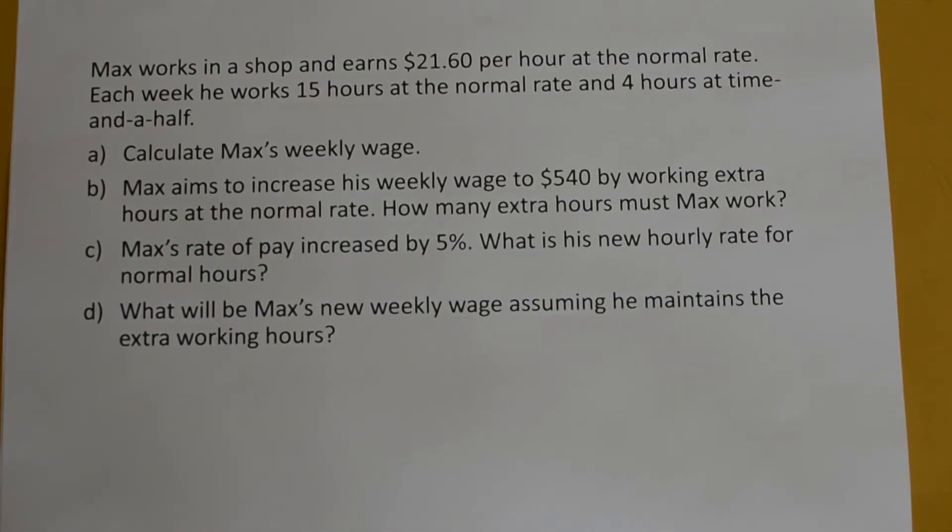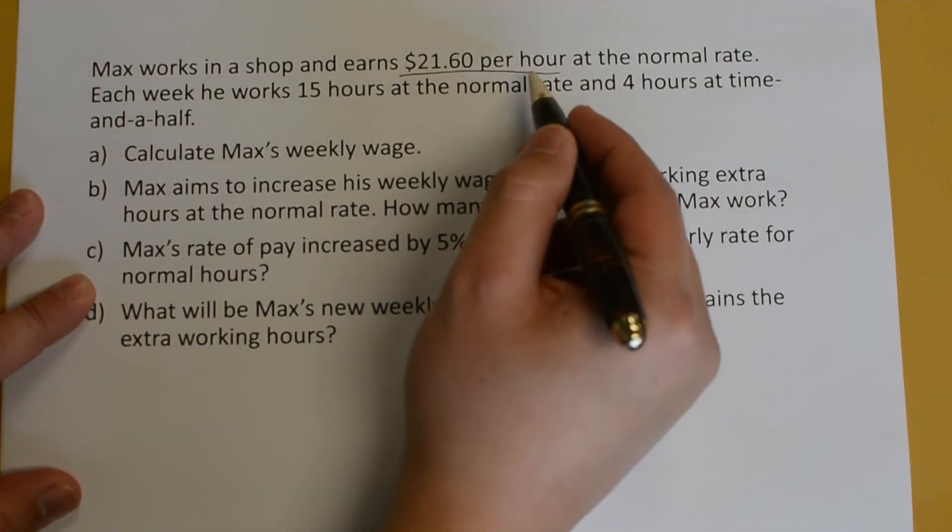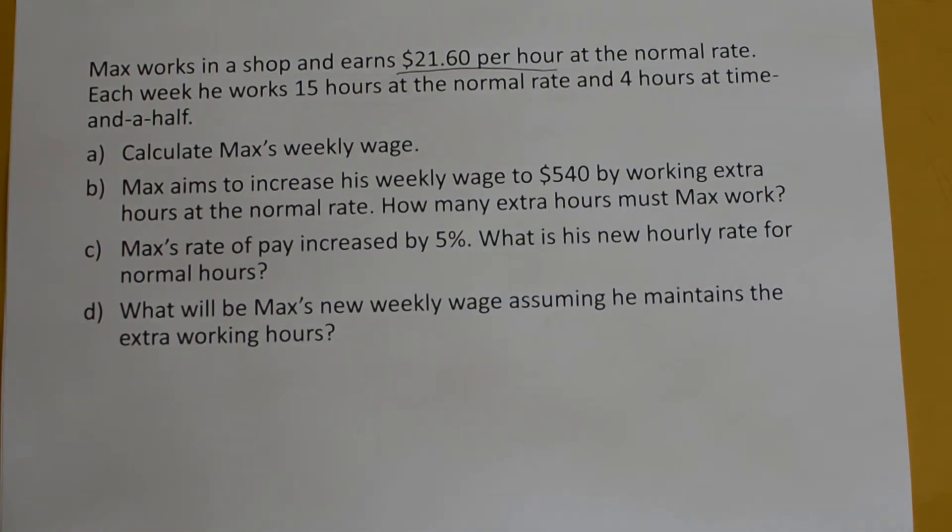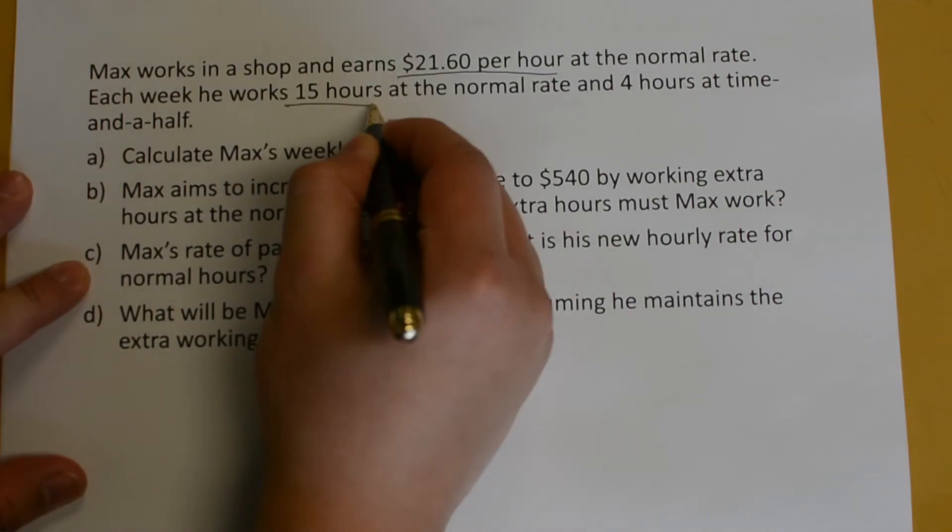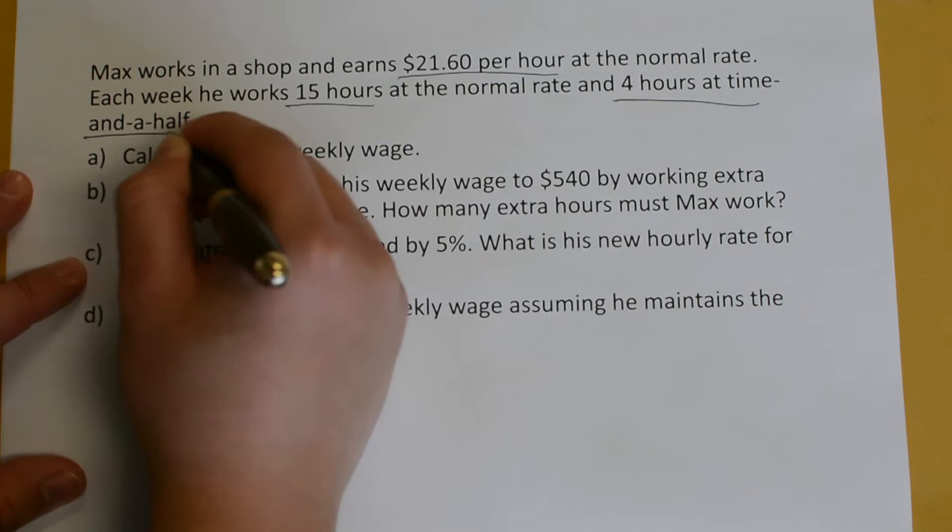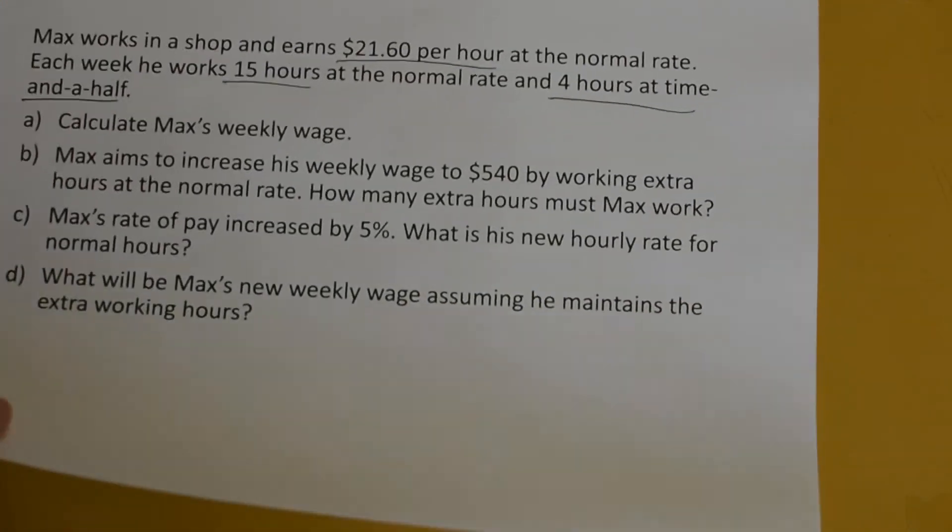Max works in a shop and earns $21 per hour. Again, it says per hour, so this is his wage at the normal rate. Each week, he works 15 hours at the normal rate, and four hours at time and a half. Now, we need to calculate Max's weekly wage. Let's just put this to the side.